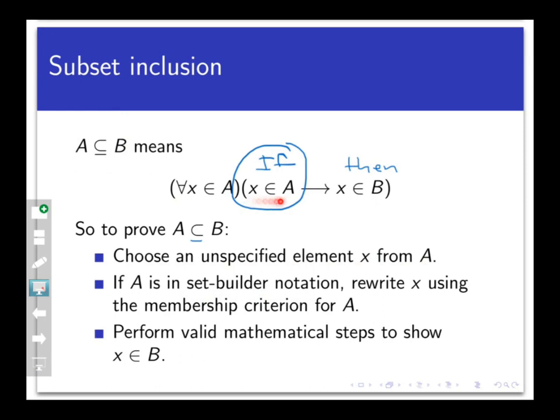If I know that X belongs to A, and A has some description for all of its elements, I can rewrite X using that description. The goal of the proof is to show that X belongs to B, and to do that we show that X not only has the property required to belong to A, it also has the property required to belong to B as well. That's how we proceed — by proving a simple conditional statement.